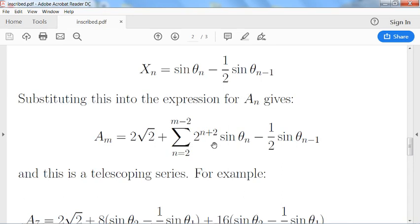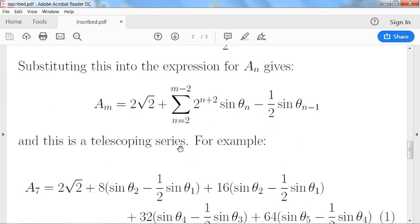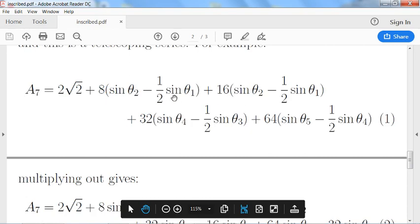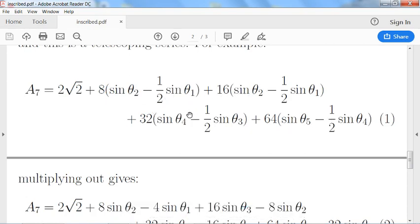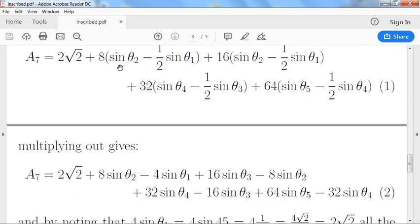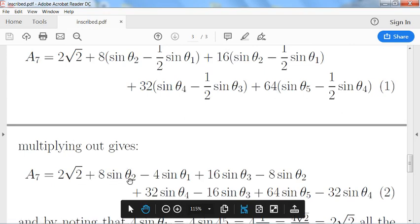And then when we substitute that in this actually becomes a telescoping series. So for example A_7 would be 2√2 plus 8 sine θ_2, all this, but what we notice is that here we've got 16 times sine θ_2. Well when we multiply this out we get 8 sine θ_2 minus 4 sine θ_1 plus 16 sine θ_3 minus 8 sine θ_2. We can see, look, this 8 sine θ_2 is cancelling with this 8 sine θ_2 here.